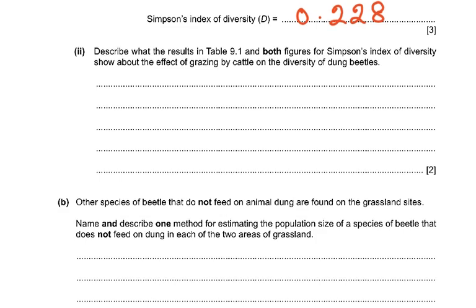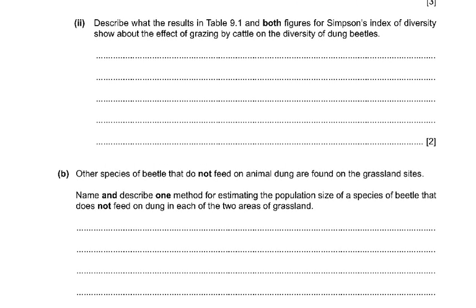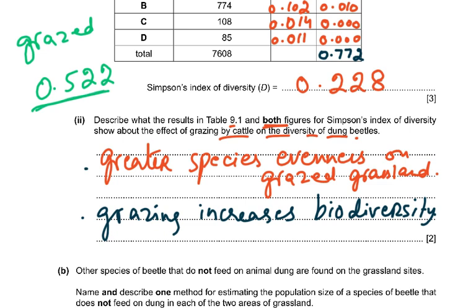Describe what table 9.1 and both Simpson's index figures show about the effect of grazing by cattle on diversity. The grazed grassland had 0.522 and the ungrazed had 0.772. Since Simpson's index ranges from 0 to 1 — where 1 indicates greater biodiversity — there is greater species evenness on ungrazed grasslands, meaning grazing reduces biodiversity.